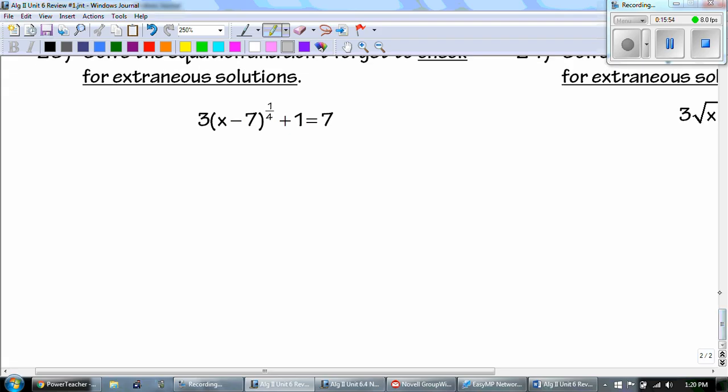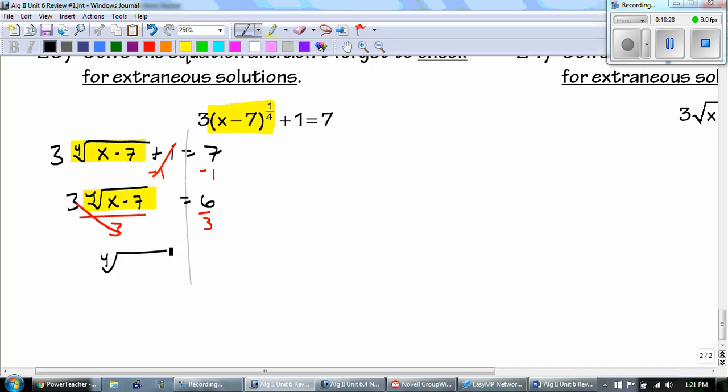Number 23. For number 23, we have to rewrite this. So, we get the fourth root of x minus 7 plus 1 equals 7. And I want to get the root by itself. So, to get the root by itself, I have to subtract 1 to both sides. To get 6, divide by 3, because it's not by itself yet. And then, to get the root by itself, I have to take it to the fourth power. So, 2 times 2 times 2 times 2 gives us 16.